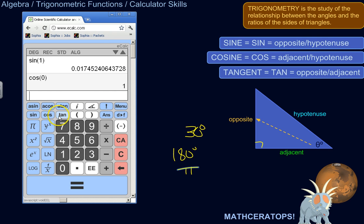So sine, cosine, tangent. This is arc sine, arc cosine, and arc tangent. Those are the inverses of sine, cosine, and tangent.